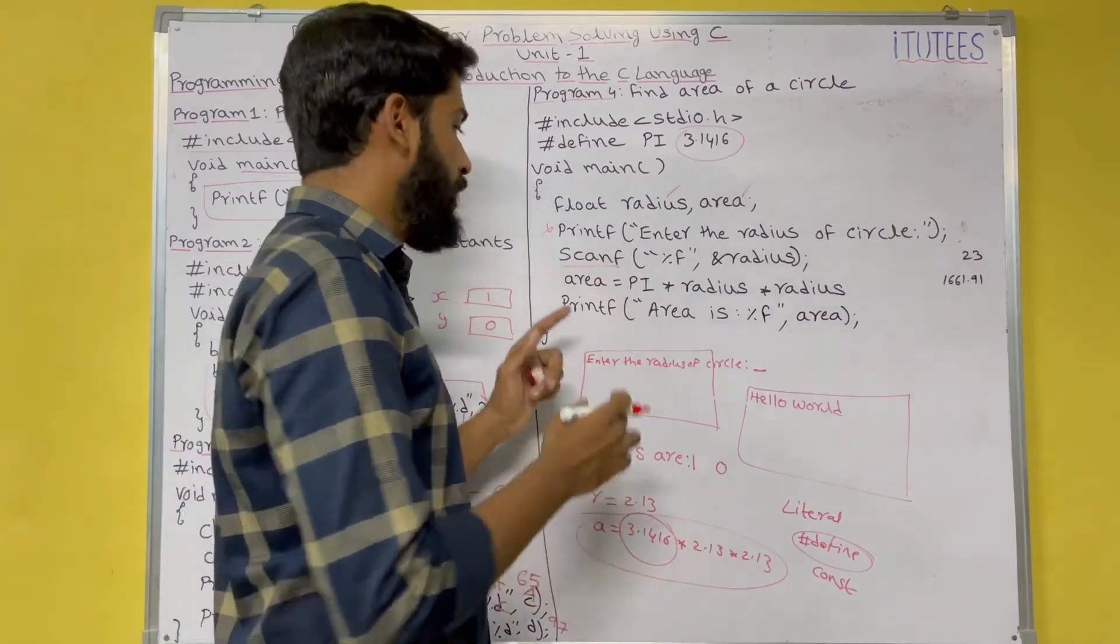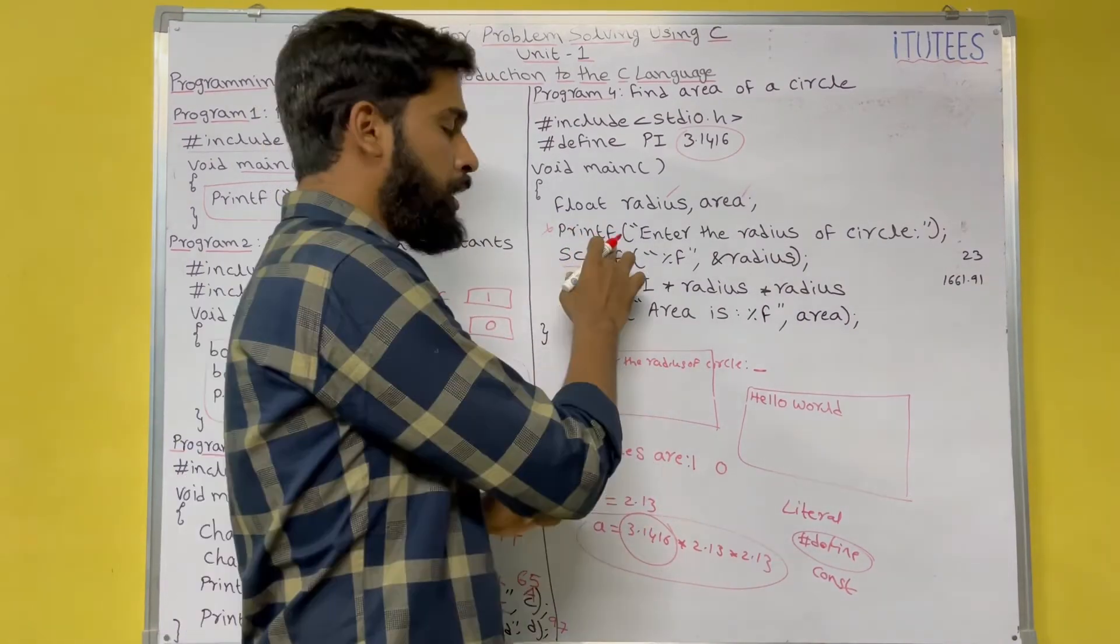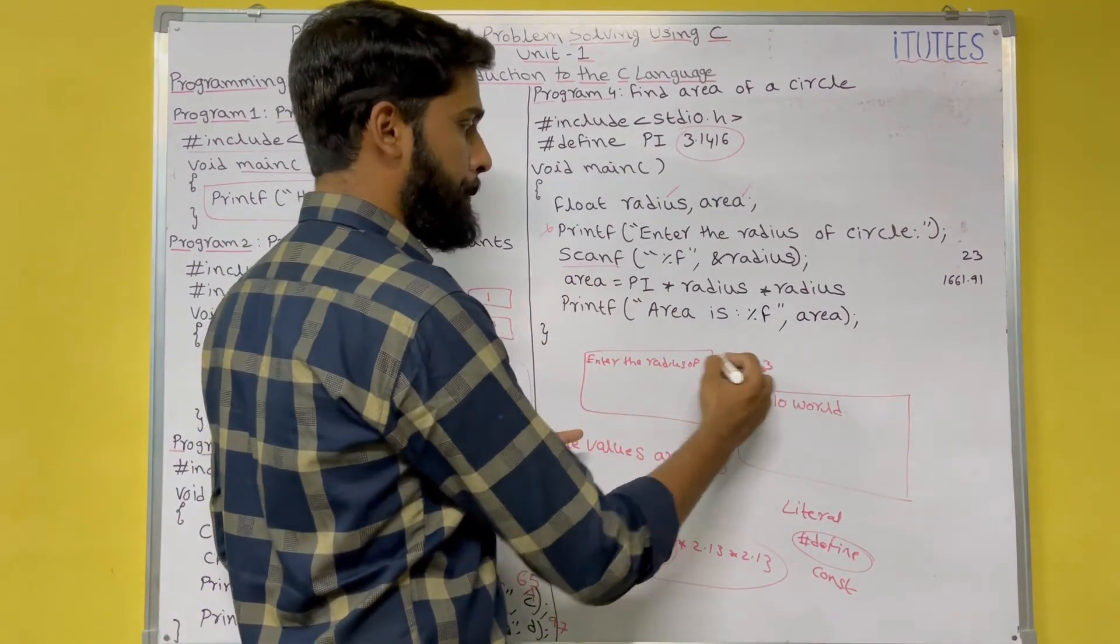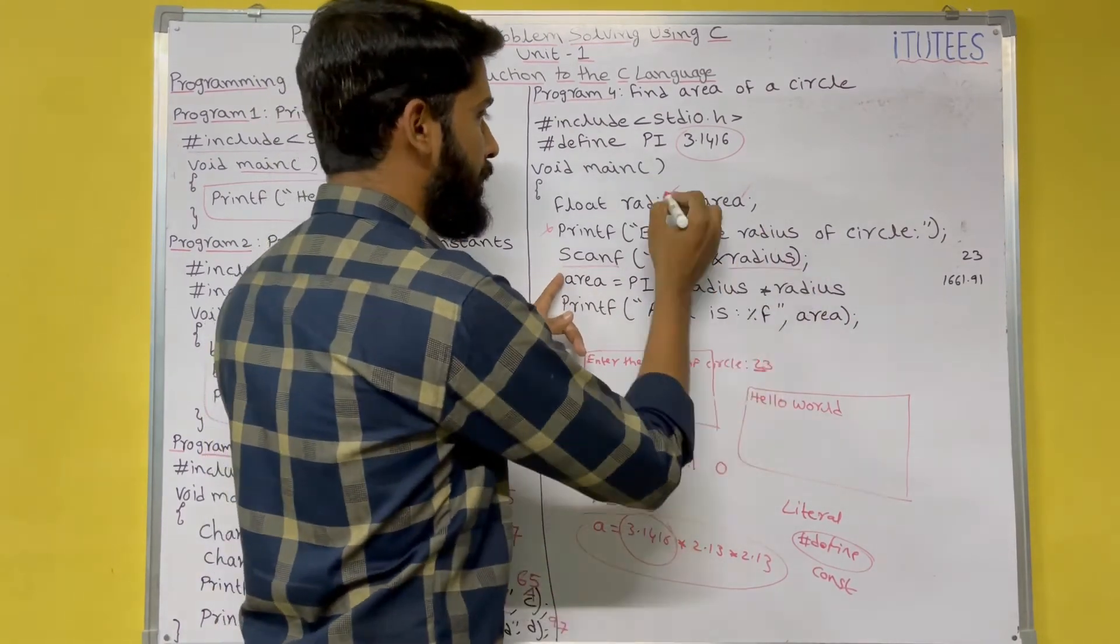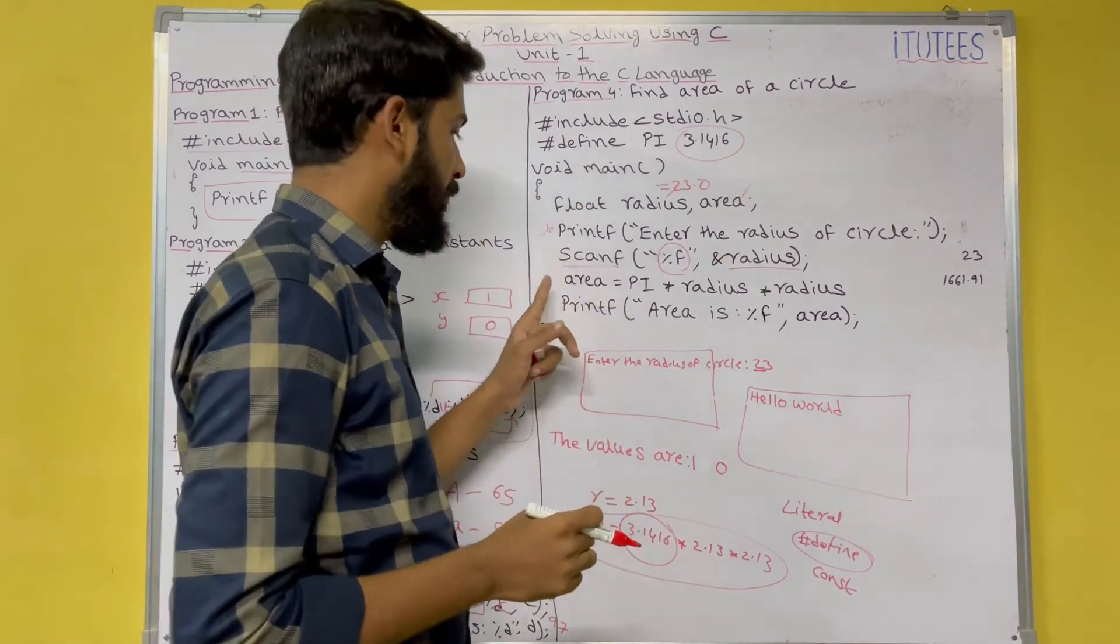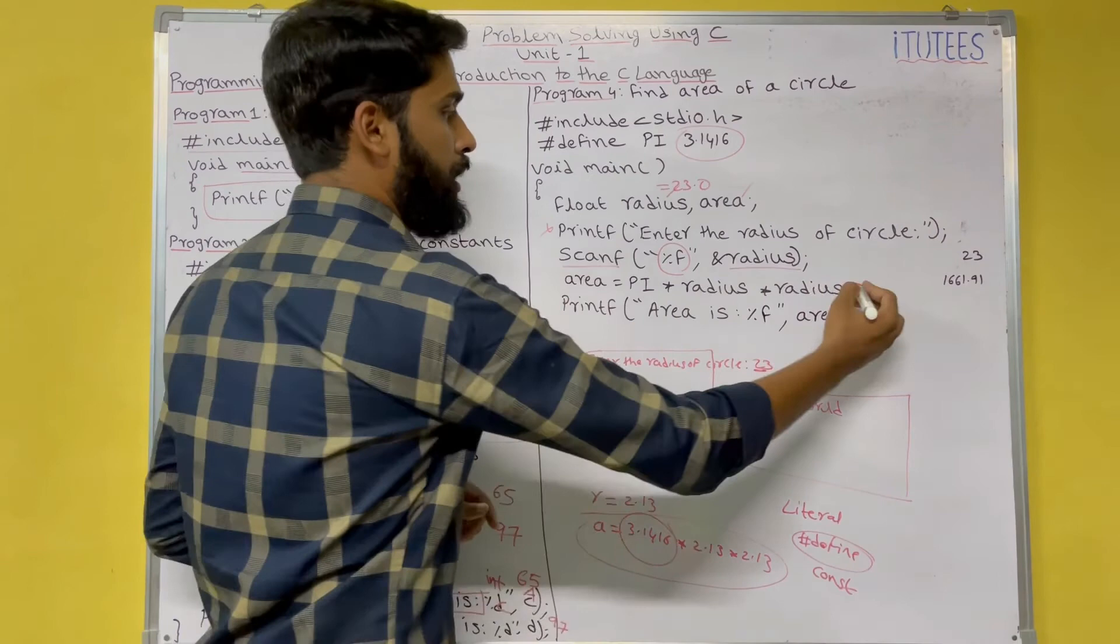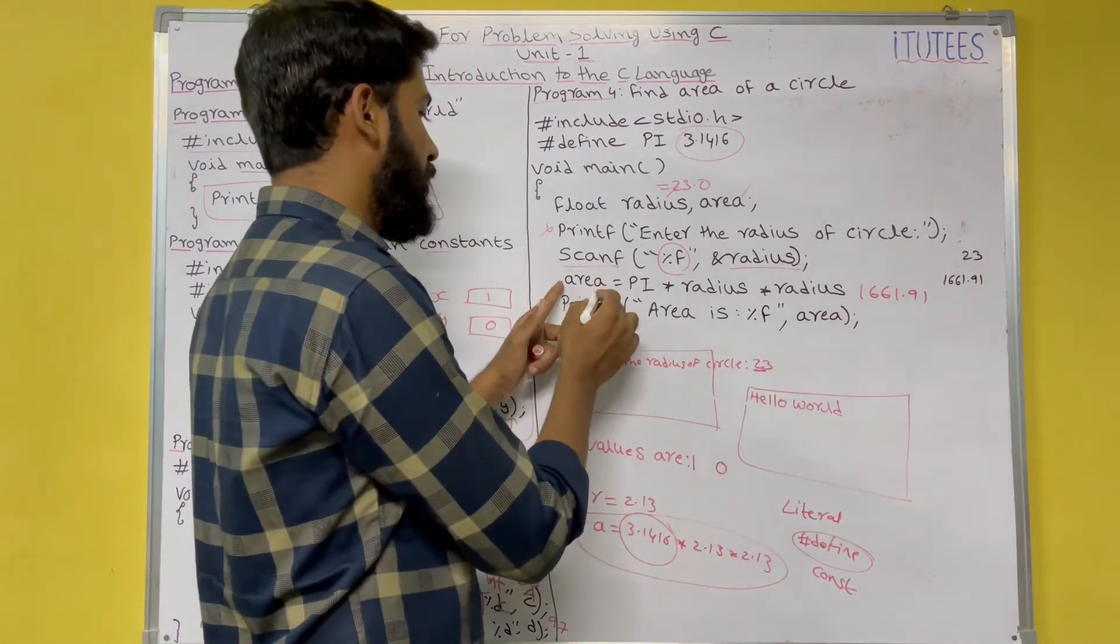Many students are thinking that before scanf, the printf is compulsory. No. What is the purpose of the printf here? This printf function is used to specify some message. To display some message. Here, I enter 23. Now, 23 is assigned into radius. Radius equals to 23.0. Why? It is float number. Next, you are going to perform the calculation. Area equals to pi into r square.